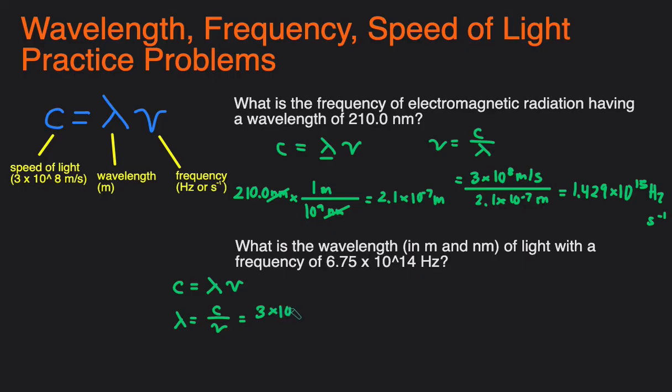Our frequency is already in the correct unit, so we can just plug both numbers in. So 3 times 10 to the 8th meters per second, and then that would be divided by 6.75 times 10 to the 14th. This is Hertz, or we can just write this as per second as well, and by doing this you can see that the per seconds will cancel out.